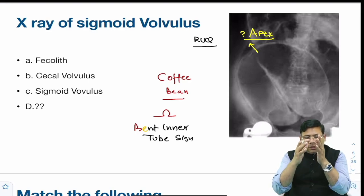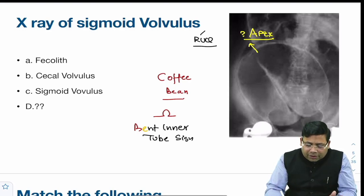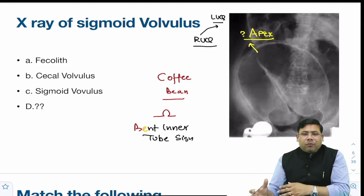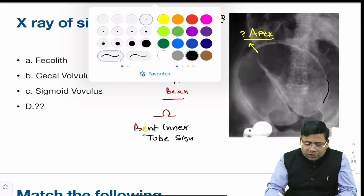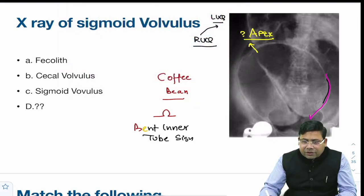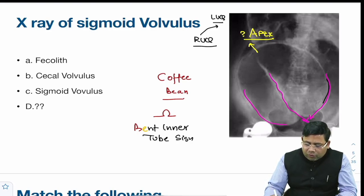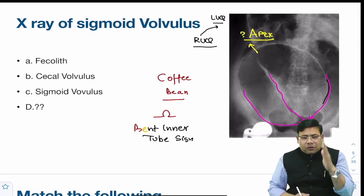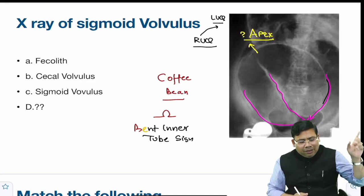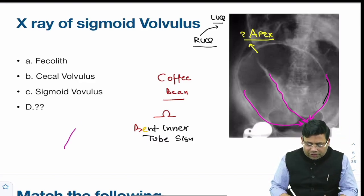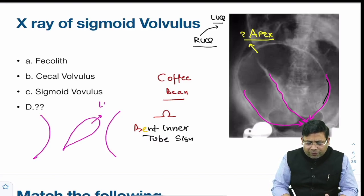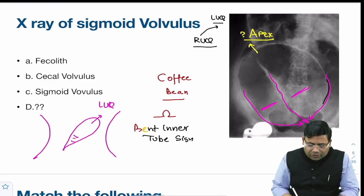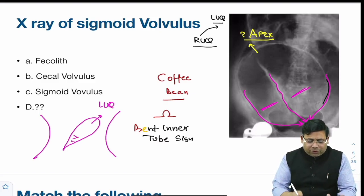In sigmoid volvulus there are three lines converging and fusing into one another — this is known as the Frimann-Dahl sign. The classical orientation of sigmoid volvulus is towards the right upper quadrant, whereas cecal volvulus has the apex towards the left upper quadrant. Sigmoid volvulus shows two air-fluid levels, whereas in cecal volvulus you get to see a single air-fluid level.